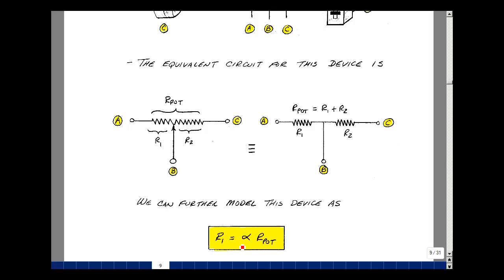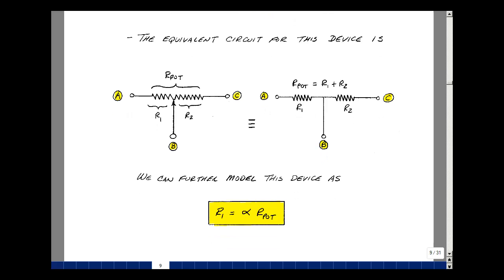Let's model that as our formula for the potentiometer, allow us to do some calculations. We have the value of R1 expressed as a percentage of the pot. Let's solve for R2 given this equation and the fact that the pot is the total resistance.